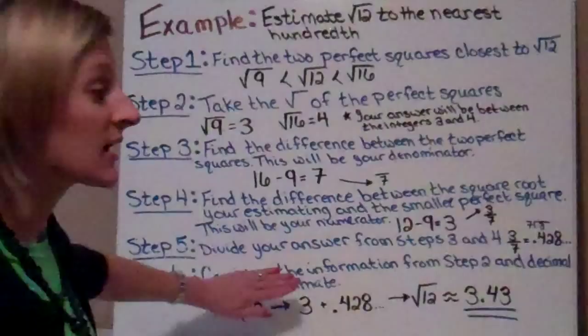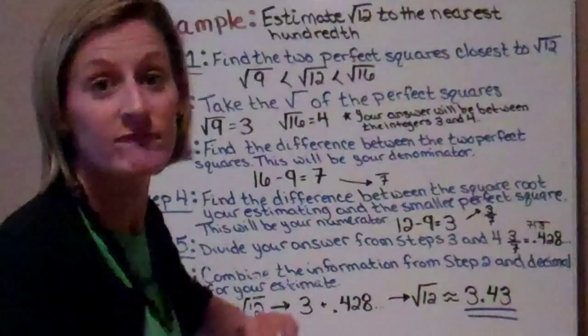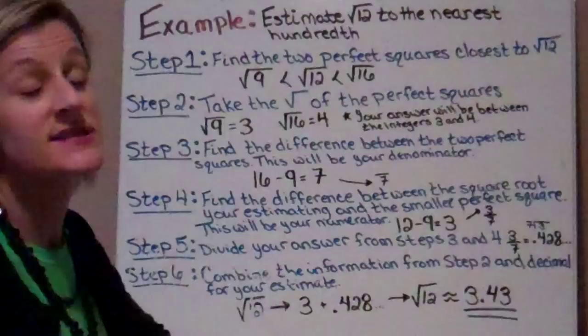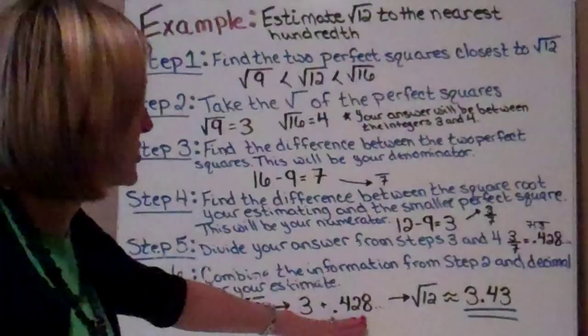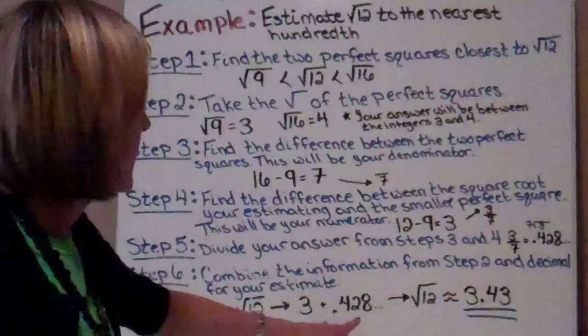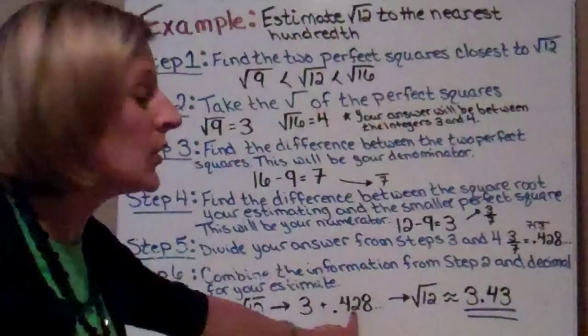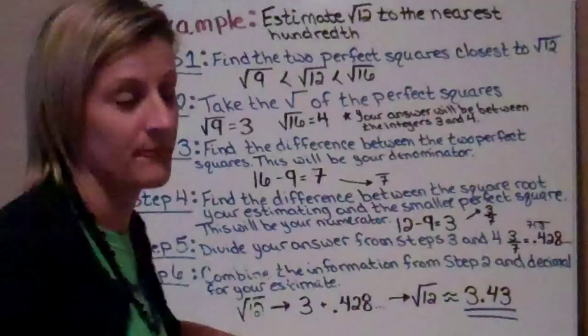Now in the last step, we're going to combine our information from step 2 and the decimal from step 5 for our estimate. In step 2, we said our answer is going to be between 3 and 4, which means our answer is going to be 3 point something. So I'm going to take my 3 and then use my decimal 0.428 to approximate my square root. Since this 8 is 5 or greater, I round that 2 up to a 3. So my estimate is going to be 3.43.